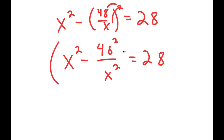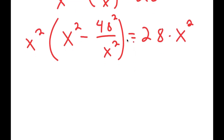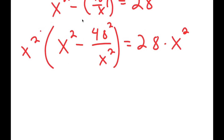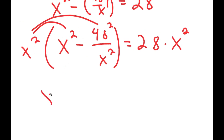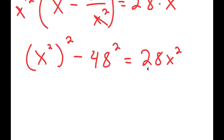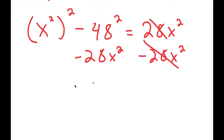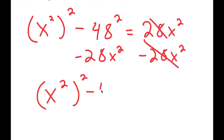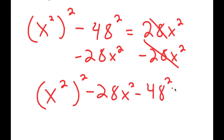Now I'm going to multiply both sides by x squared. On the left-hand side, distributing x squared: x squared times x squared is x to the fourth power, and the 48 squared over x squared times x squared — the x squared terms cancel — leaving 48 squared. This equals 28x squared. Subtracting 28x squared from both sides gives x to the fourth minus 28x squared minus 48 squared equals zero.